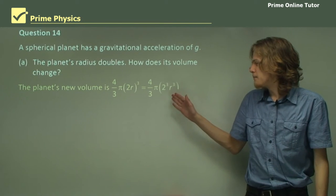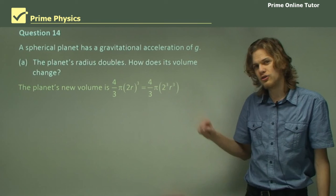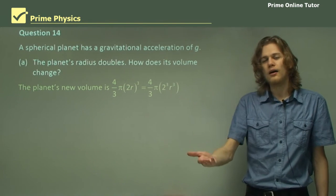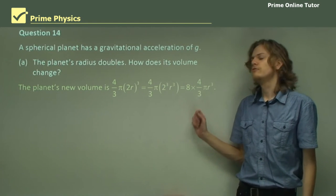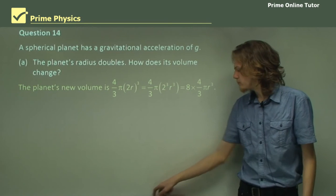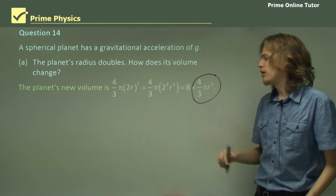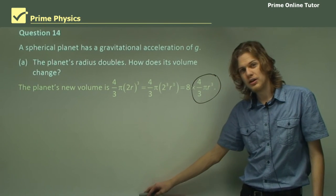If we expand that, then we have 4 thirds pi, 2 cubed, r cubed. Now let's take that 2 cubed and move it out to the front of the equation. Now we have 8 times 4 thirds pi r cubed. So this part of the expression, 4 thirds pi r cubed, is what the volume of the planet would be before we doubled its radius.